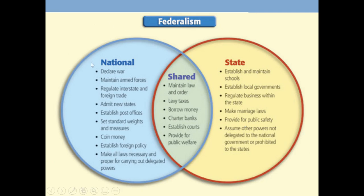The powers to write down: declare war, maintain an army, regulate interstate and foreign trade — those top powers are important. Shared powers — the national and states share these — include maintaining law and order, taxes, and borrowing money. State powers include dealing with schools, local governments, regulating businesses within the state, and marriage laws. That's what the states do. That's enough for today — thank you.